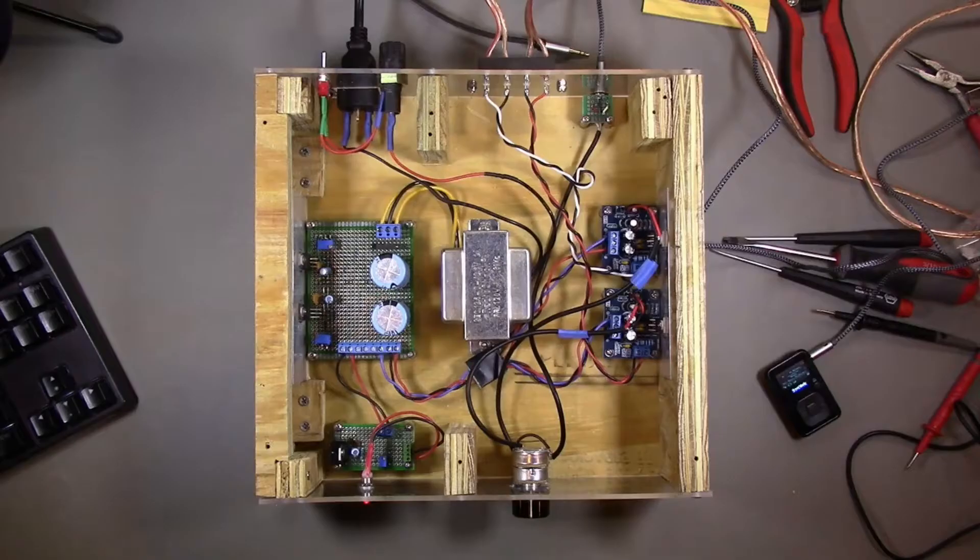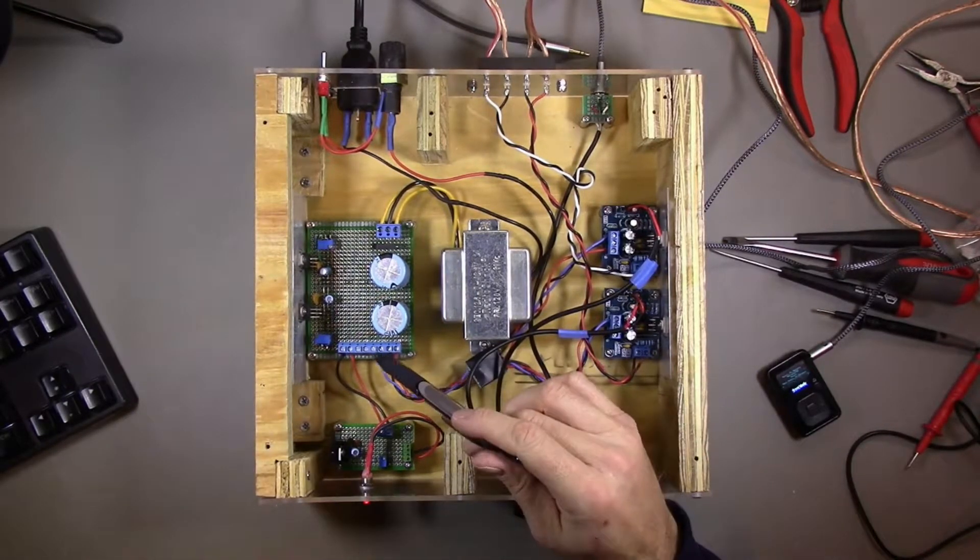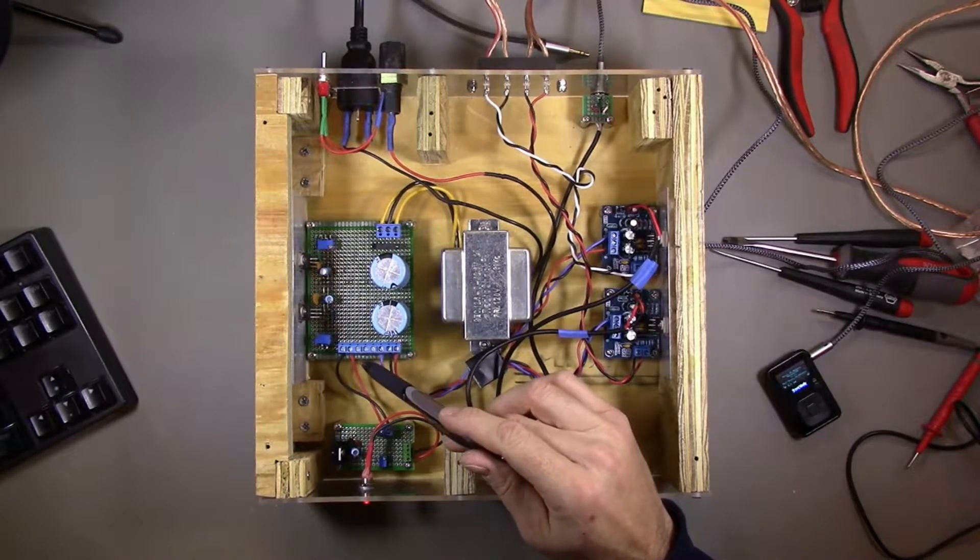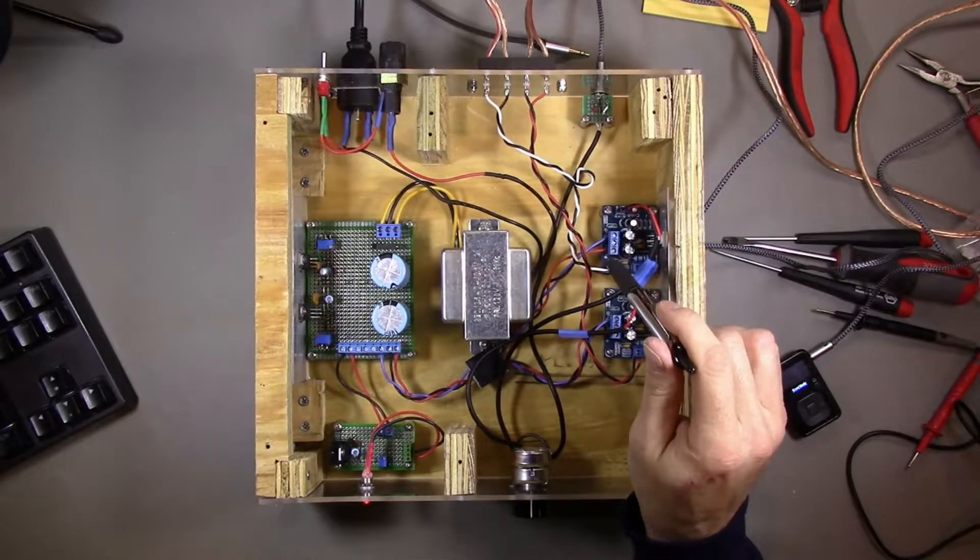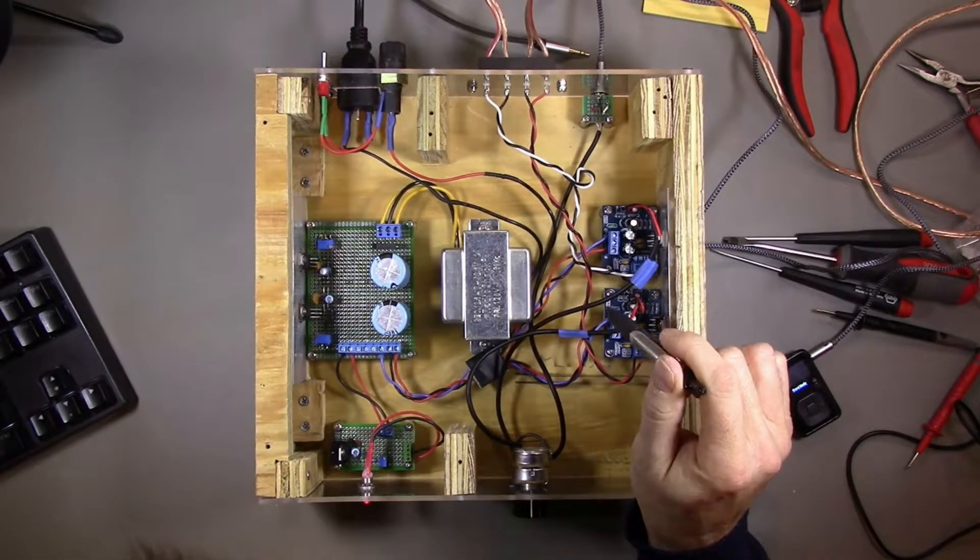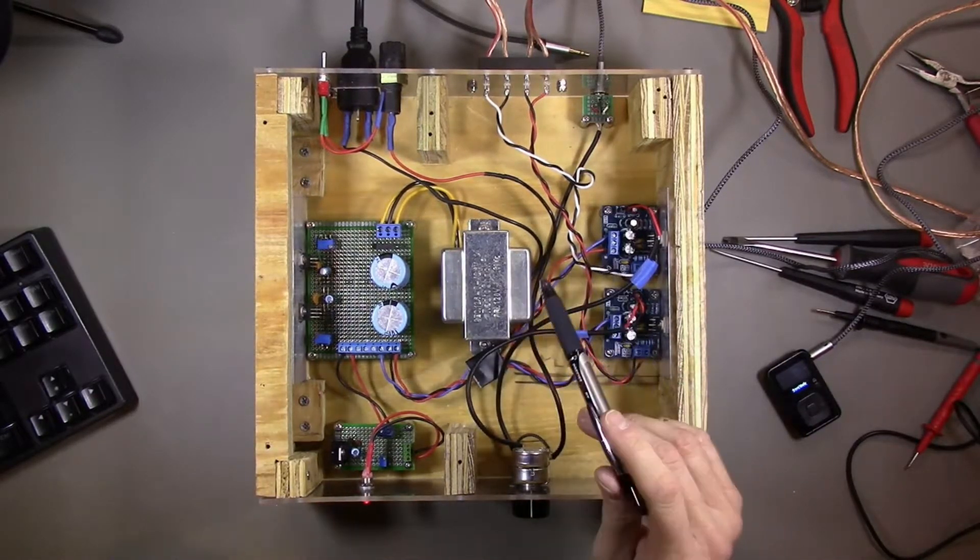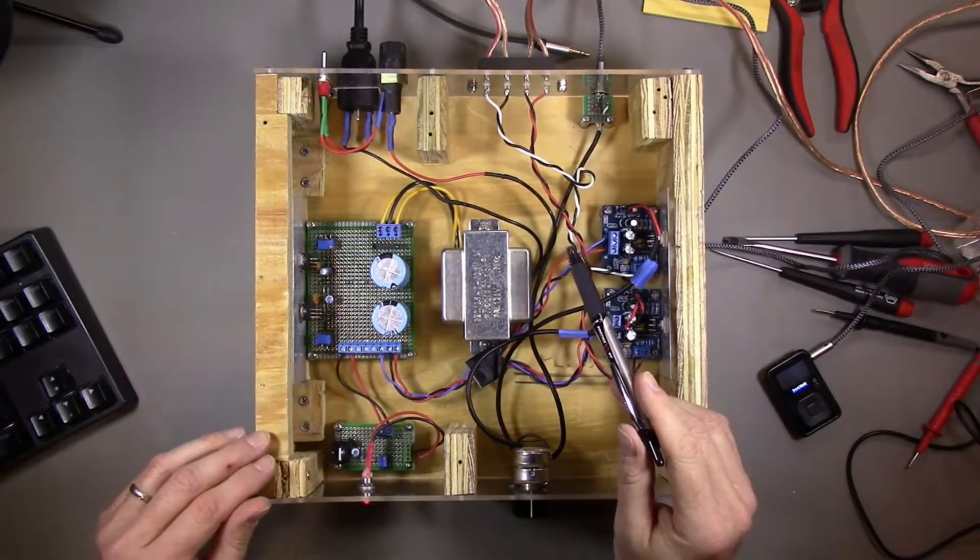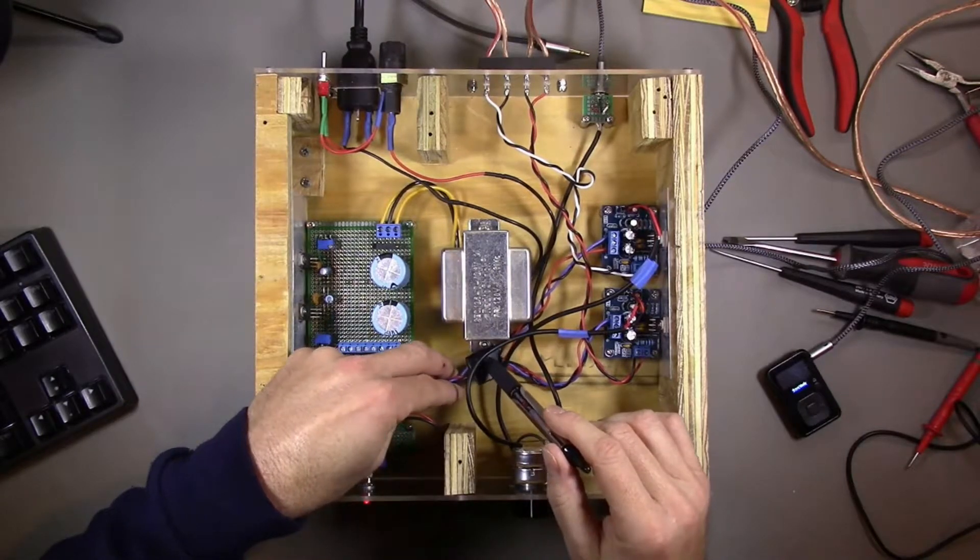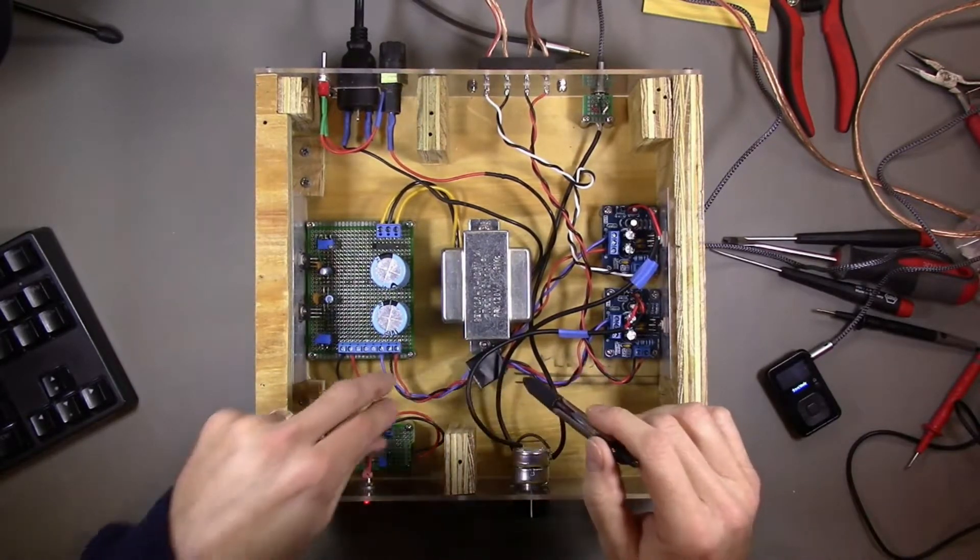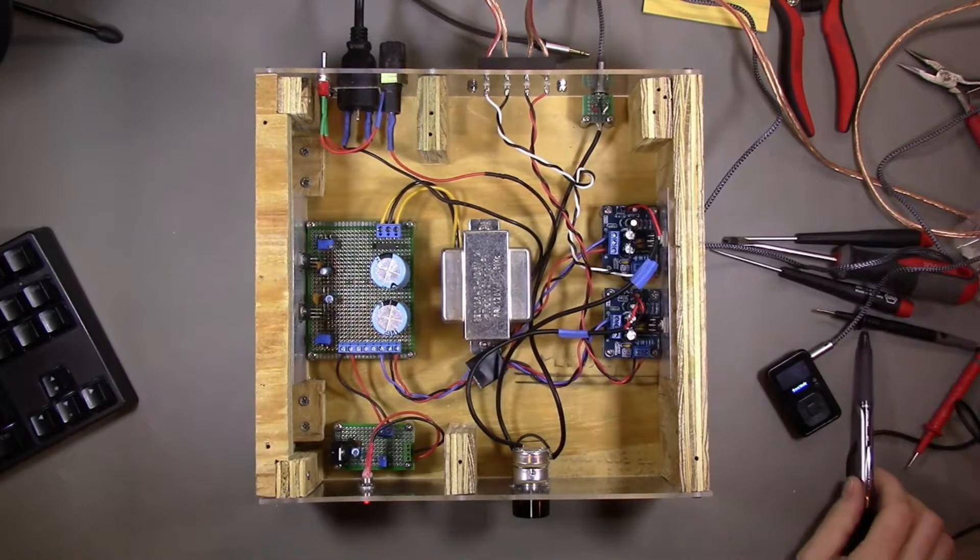All right, so before I can install the preamplifier I need to deal with one problem, which is that the power supply board only has two sets of screw terminals providing split rail power. Originally I thought that was all I would need because I would just have the two amplifier modules in here, but now I have the two amplifier modules and the preamp, all of which need both the positive and negative supply voltages. So basically what I did is I wired up this little adapter that splits the split rail power into two separate sets of wires, one going to each amplifier module.